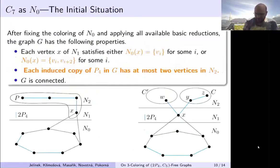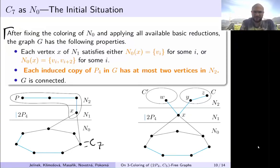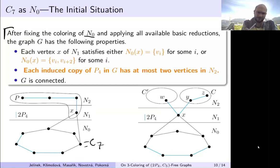For the rest of the proof, we can suppose the graph contains C7, and we do the same trick again — set C7 as N0 and apply the same partition. We apply basic reductions: if you know the color of your neighbors, you cross out that color from your list. That is the case where we are using lists.